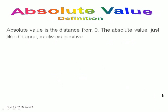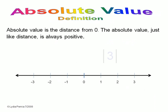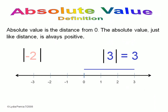Absolute value is the distance from zero. The absolute value, just like the distance, is always positive. The absolute value of positive three is three, or three units from zero. The absolute value of negative two is two, or two units from zero.